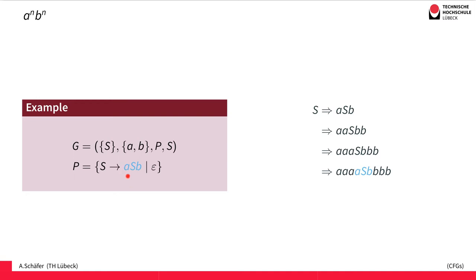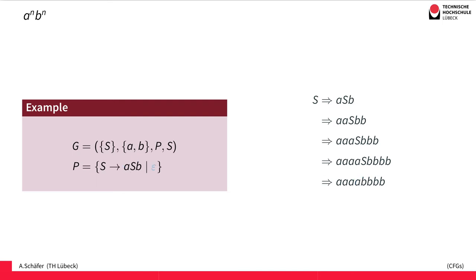For every A we construct an equal number of B's, and we do it from the middle. If you look closely at the sentential form on the right-hand side, the S is always in the middle, and from the middle we create the A's to the left and the B's to the right. We continue, and at some point we use the rule that replaces S by the empty word epsilon, and then we are done with the derivation. There's no non-terminal left on the right-hand side, and we have a word with an equal number of A's followed by an equal number of B's.